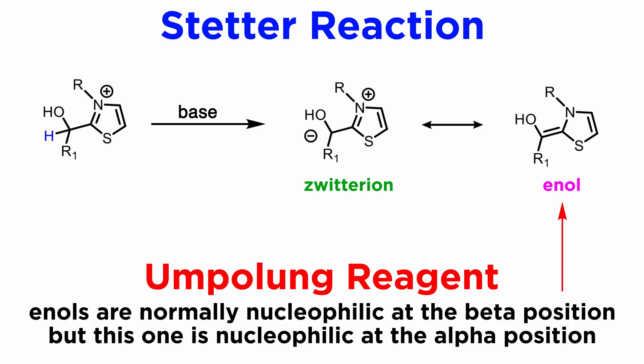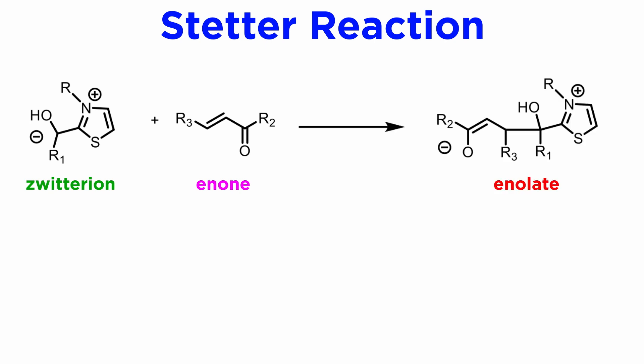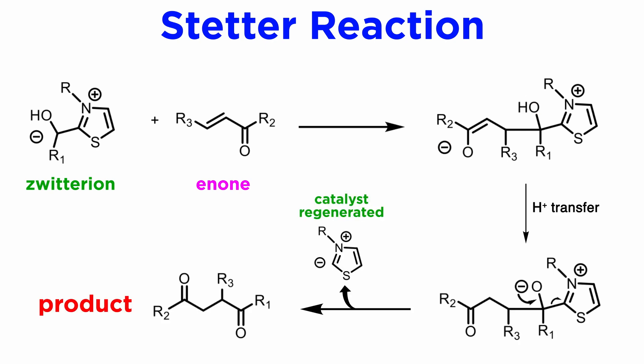Now we see why we use the term umpolung here. The carbon which was in the carbonyl of the aldehyde has suddenly become nucleophilic instead of electrophilic, and we are ready to attack the enone. The new zwitterion attacks the enone at the conjugate position, yielding an enolate, which gets protonated by the alcohol, yielding an alkoxide, which fragments to the product and back to the catalyst — the thiazolium zwitterion. The catalyst is regenerated, ready to perform the same reaction again.